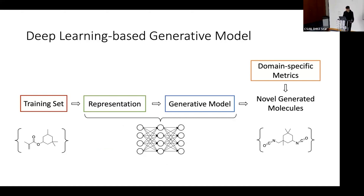The most popular methods today are deep learning-based generative models. The most common is the autoencoder structure — an encoder and a decoder. Both the representation and the generative model are deep learning-based: neural networks convert input molecules through a latent vector, and the generative model is a sampling function plus a decoder on that latent space.